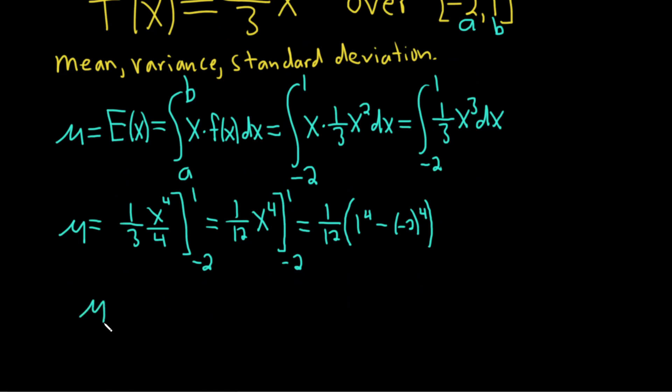So μ equals one-twelfth times (1 minus 16), because 2 to the fourth is 16. This is negative 15 over 12, which is our expected value for x.